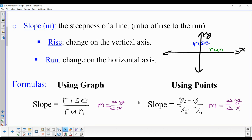The formula we use for ordered pairs is slope equals the change in y over the change in x. We find that by subtracting the y-values in the numerator and subtracting the x-values in the denominator.